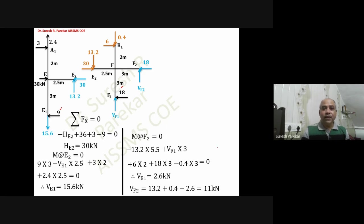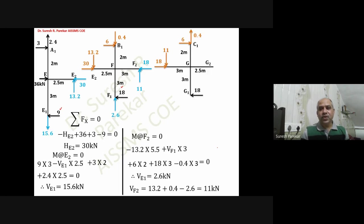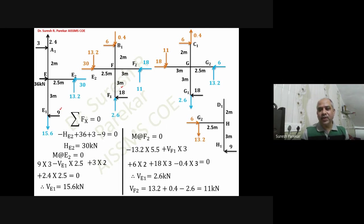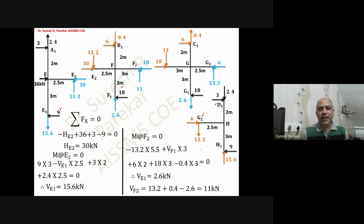For joint G, using known values from previous joints, unknowns are VG1, VG2, and HZ2. The two 18s cancel, leaving HZ2 equal to 6 kilonewtons. Taking moment about G2 gives 2.6, and Fy gives 13.2. For joint H, known values from the adjacent joints and H2 give the only unknown vertical value: 13.2 plus 2.4 equals 15.6 kilonewtons upward.